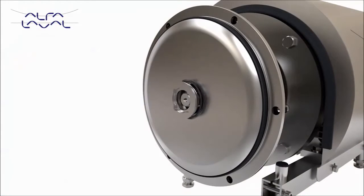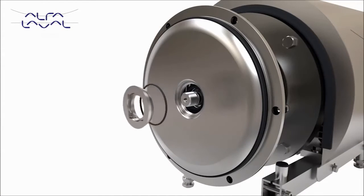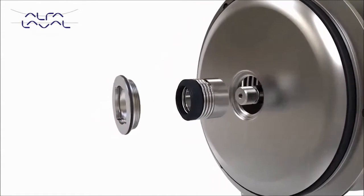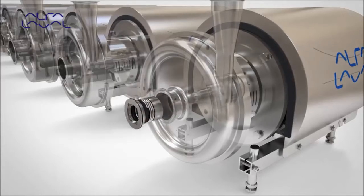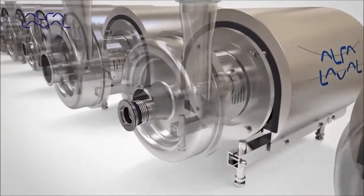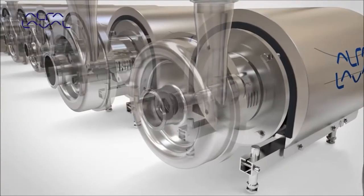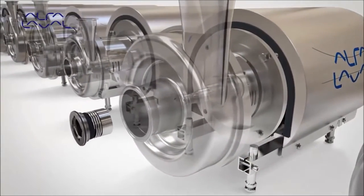The shaft seal is front loading, allowing for easier and faster maintenance during seal change. A universal design allows the same shaft seal to be fitted to 10 different pump sizes. This reduces spare parts inventory.